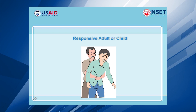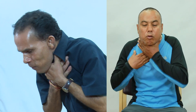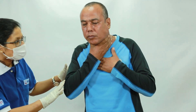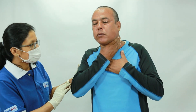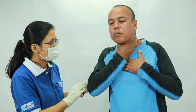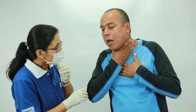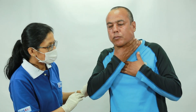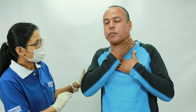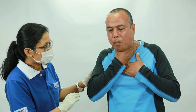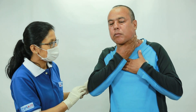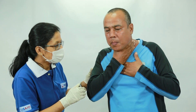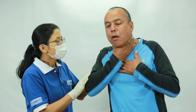For a responsive adult or child, patient standing or sitting: take BSI precautions, introduce yourself and ask for permission. Determine if the obstruction is complete or a partial obstruction with poor air exchange.